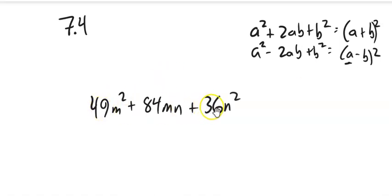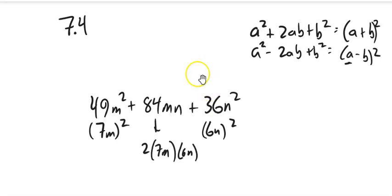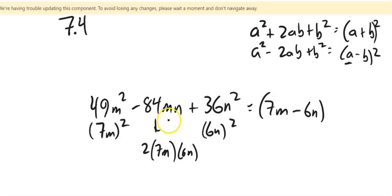49's a square and 36 is a square. This is a good candidate for it. 7m², 6n². So this middle should be 2 times 7m times 6n. mn is there. 2 times 7, 14 times 6. Yep. So this would factor to (7m+6n). And notice if this had been minus, that would have just changed this to minus as well.